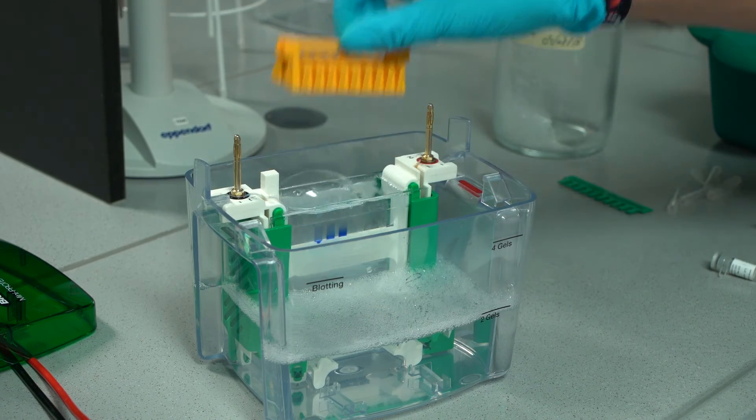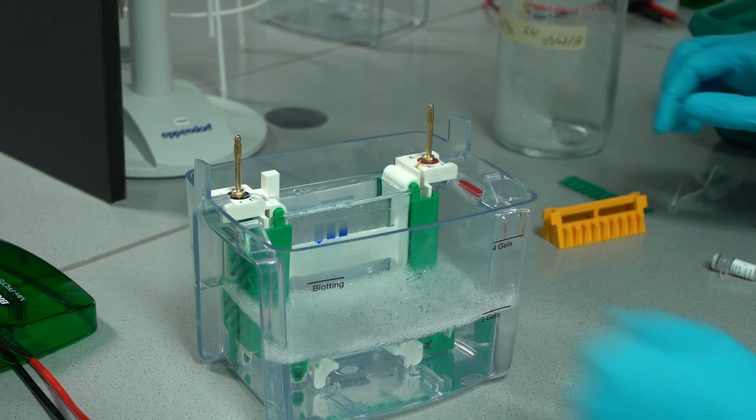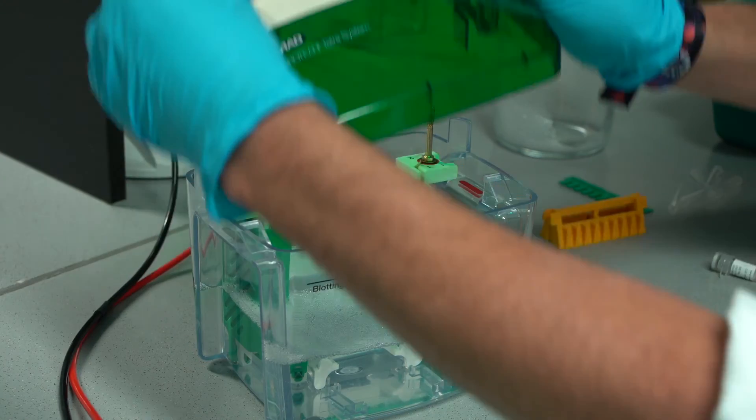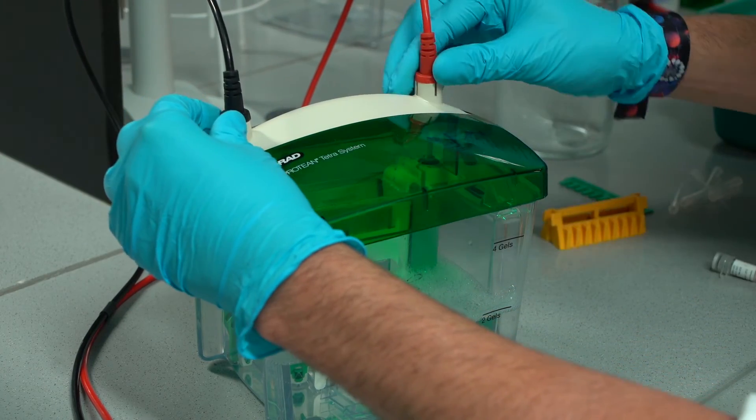When everything is loaded onto the gel, the lid is put on the tray. Ensure that the correct poles touch each other: black on black and red on red.